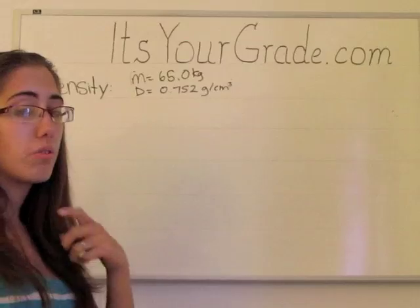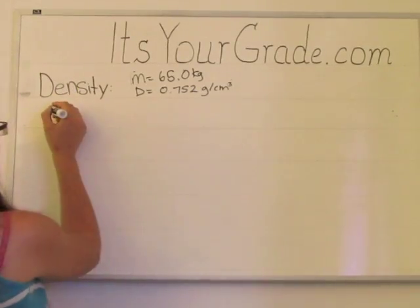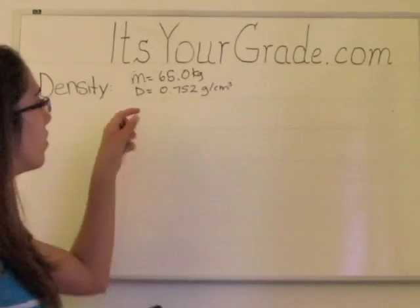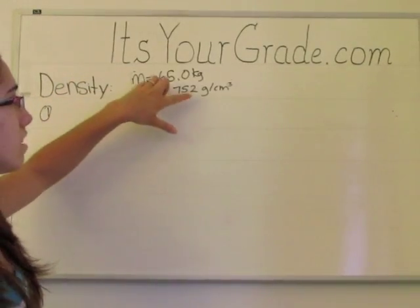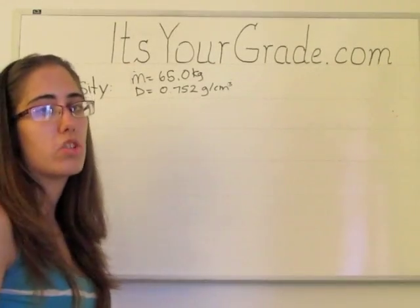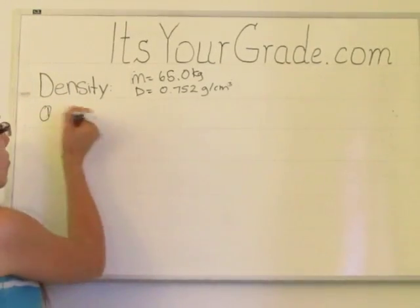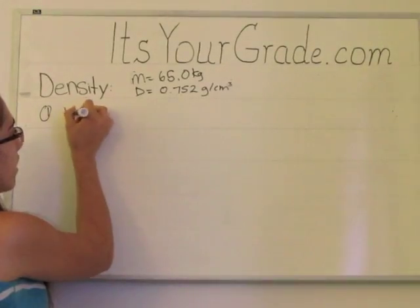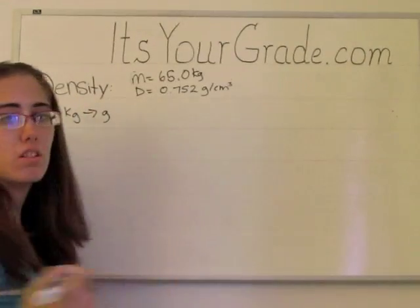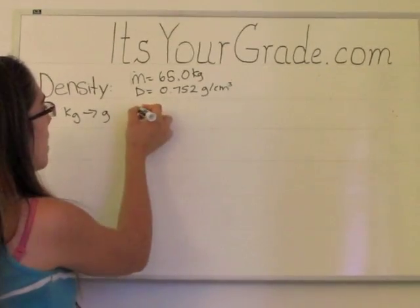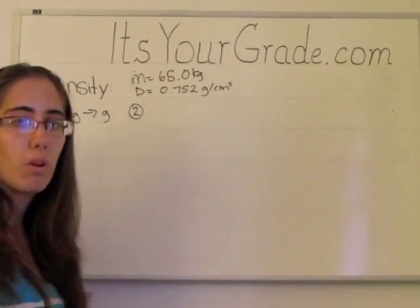To do this problem we need to do three steps. The first step: if you look at the mass and the density, we have kilograms and grams, but those units don't match up. So for the first step we're going to convert the mass, kilograms, into grams using unit conversions.